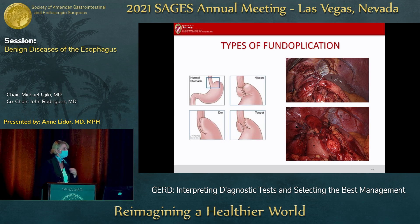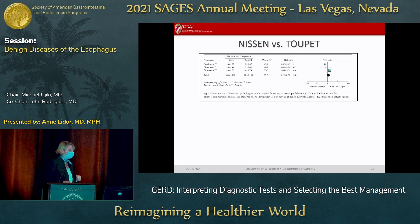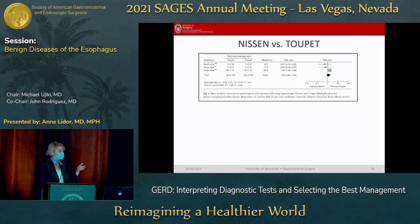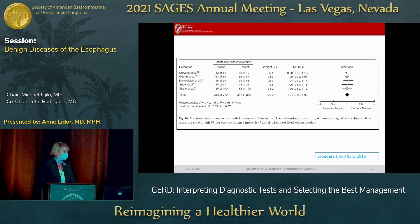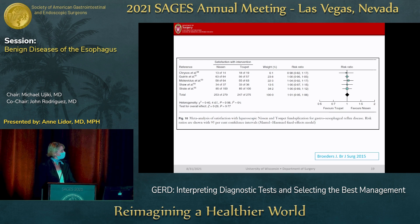Dor fundoplication is not really being used as a primary anti-reflux operation at this point. Looking at the meta-analysis reviewing outcomes between partial and full fundoplications: for recurrent acid exposure, outcomes are pretty equivalent. For dysphagia, results favor partial fundoplication. For patient satisfaction, it's pretty equivocal. So which operation you use is probably surgeon's choice, though based on the consensus this morning, that may be revised.